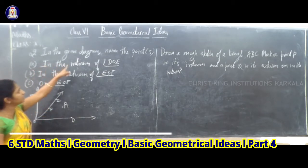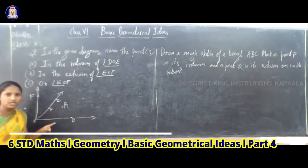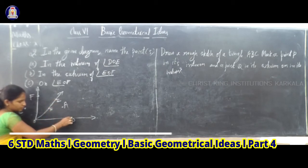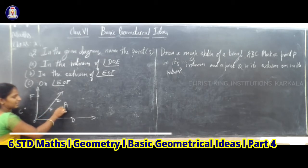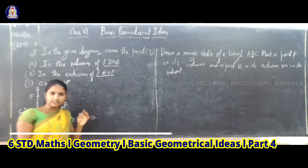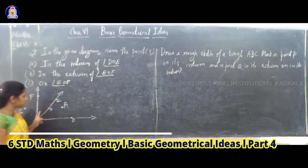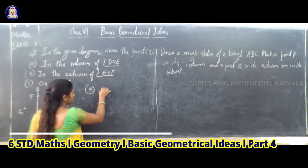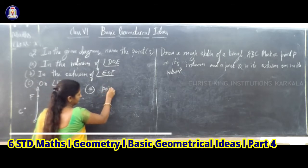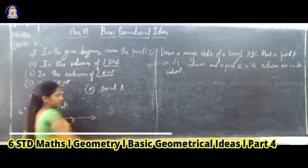So in the interior of angle DOE — see the angle DOE. In this, which point can you see inside the angle? That point is A. Correct? The point A is inside the angle DOE. So the first answer: in the interior of angle DOE is point A. Clear?